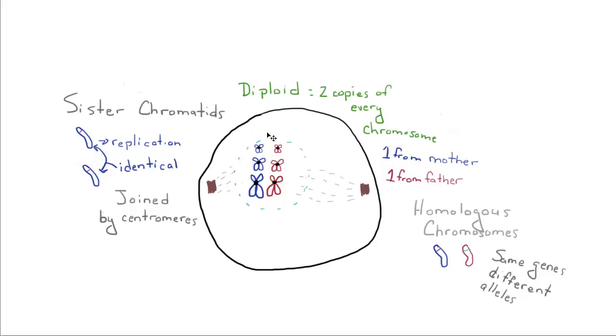As you can see, you've got the nuclear membrane is beginning to disappear. You've got your centrioles here, and your spindle fibers coming out from your centrioles.